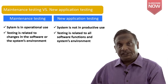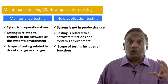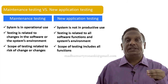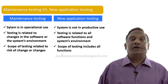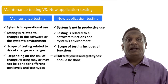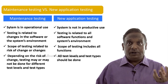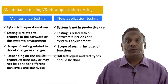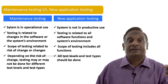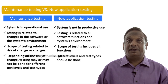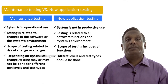In new application testing, testing is related to all software functions and the system environment — all functions must be tested before putting into production. The scope in maintenance testing is related to the risk of change only. In new application testing, the scope includes all functions. Also, in maintenance testing, depending on the risk of change, testing may or may not be done for different test levels and test types, because regression testing takes a lot of time. In new application testing, all test levels and test types should be done.